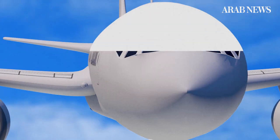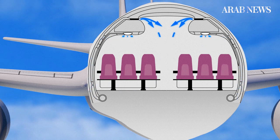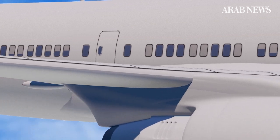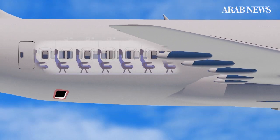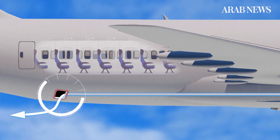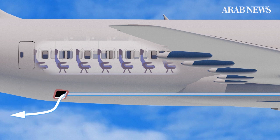Once it's mixed with ambient air, the flow is distributed inside the aircraft, moving up the fuselage towards the cabin ceiling. It then passes through air vents situated above passengers' seats. Meanwhile, a pressurization valve at the rear of the aircraft continuously sucks in air from the cabin at floor level near passengers' feet and blows it out of the aircraft, thereby creating a continuous airflow.